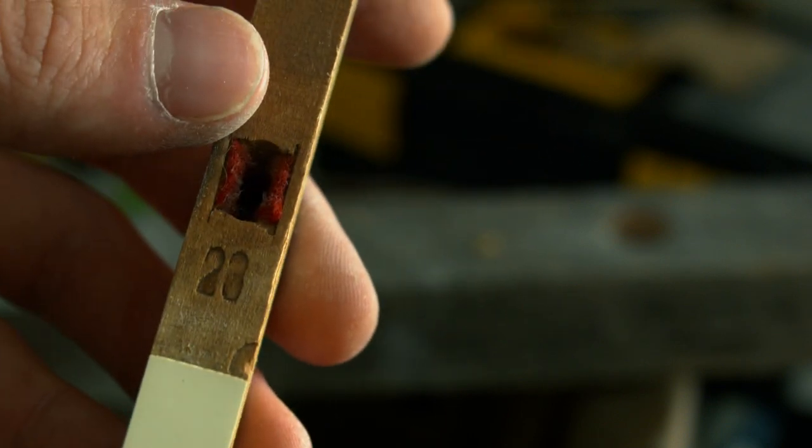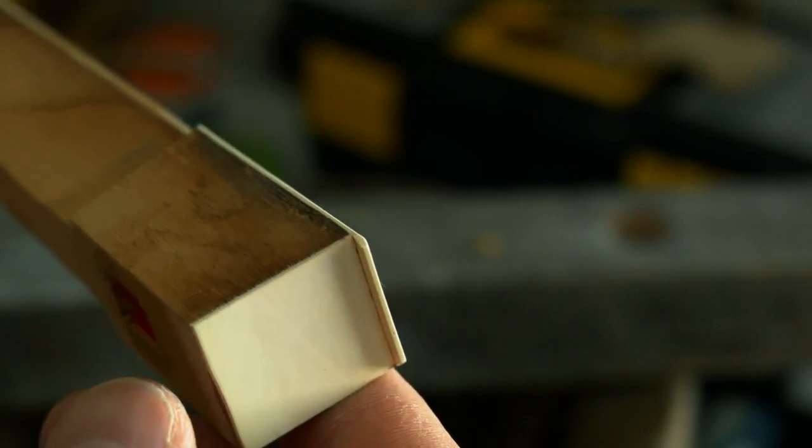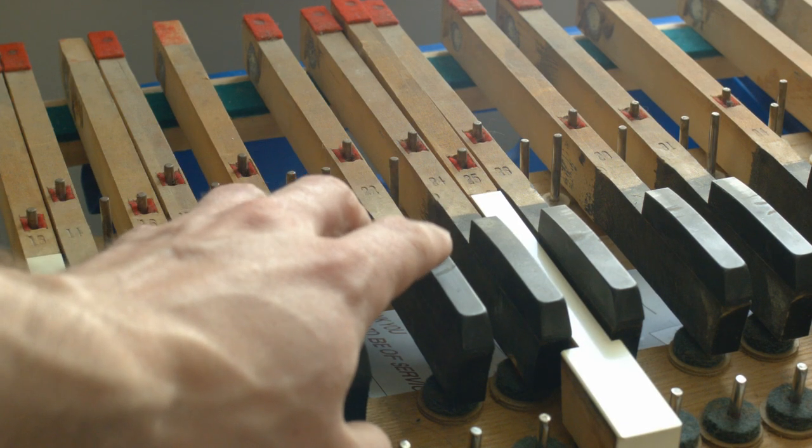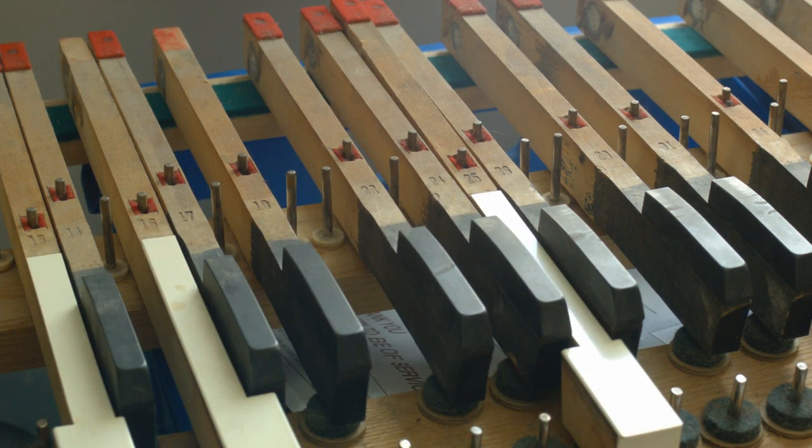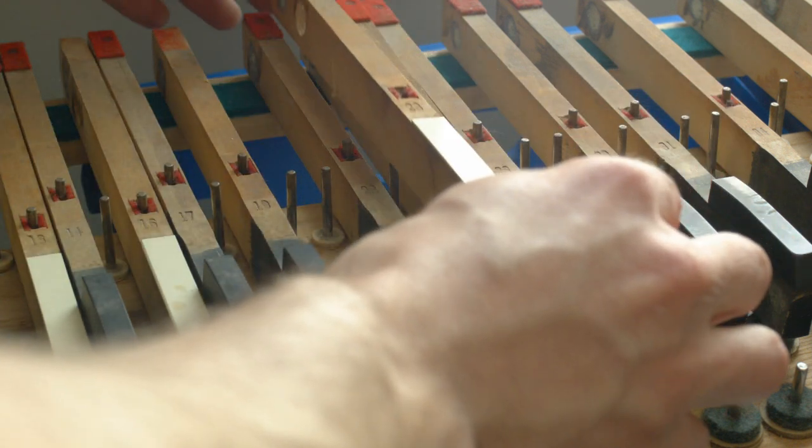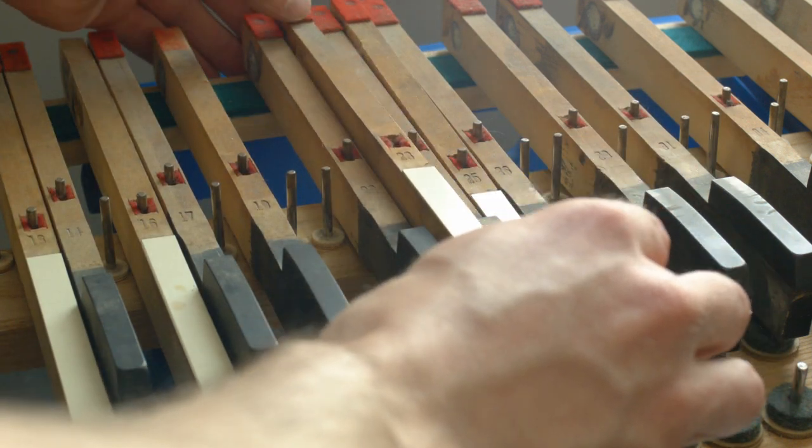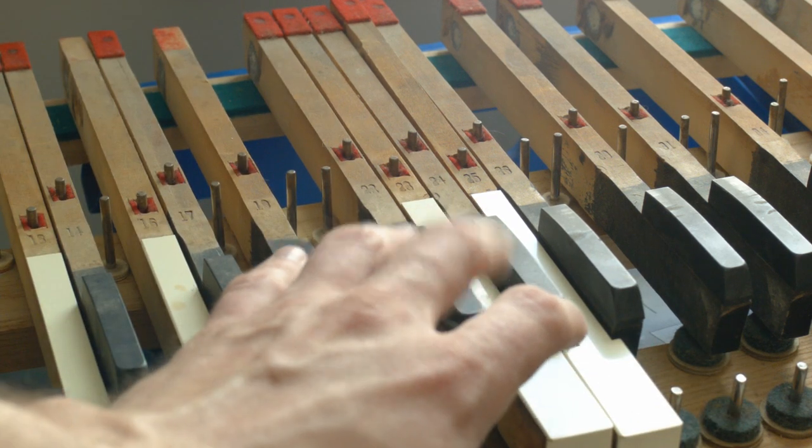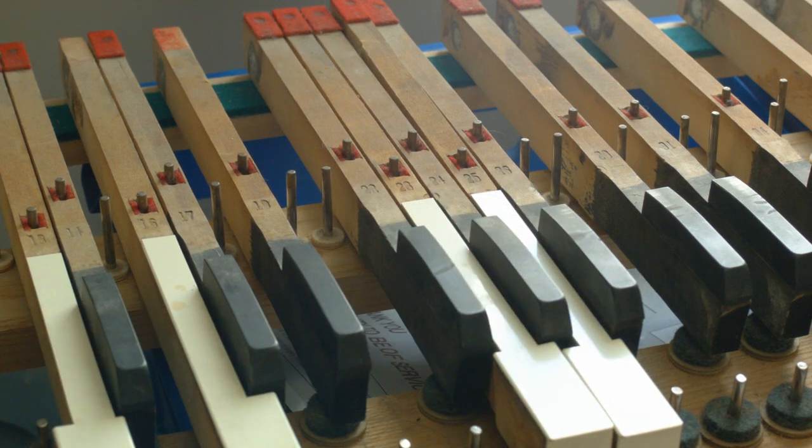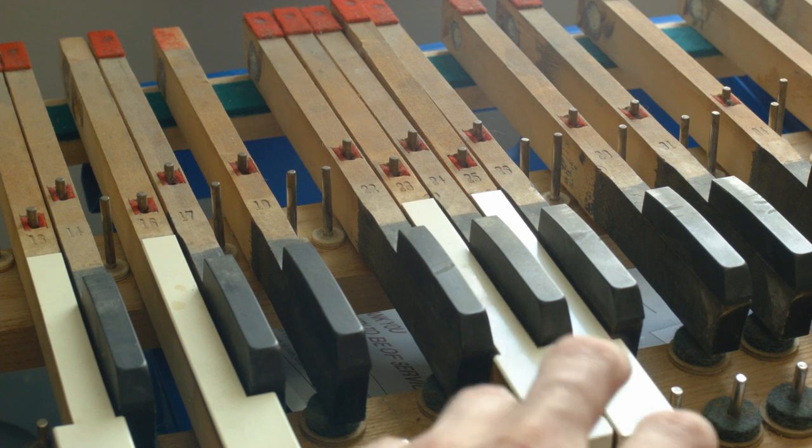Key number 23 it's a G. Those mortises and felt bushings especially the ones underneath the key will probably need some work as well. Now I'll just show putting this key in and show the clearance between the neighboring key number 22 and 24, that A flat and F sharp. It's much more responsive now like a historically authentic harpsichord should be and there's plenty of clearance between those two keys. They move very easily. Not all of the keys are like this. Some of them will need some work.